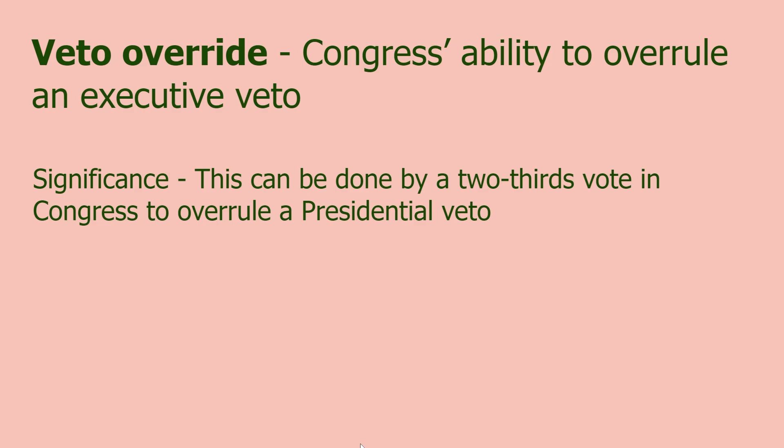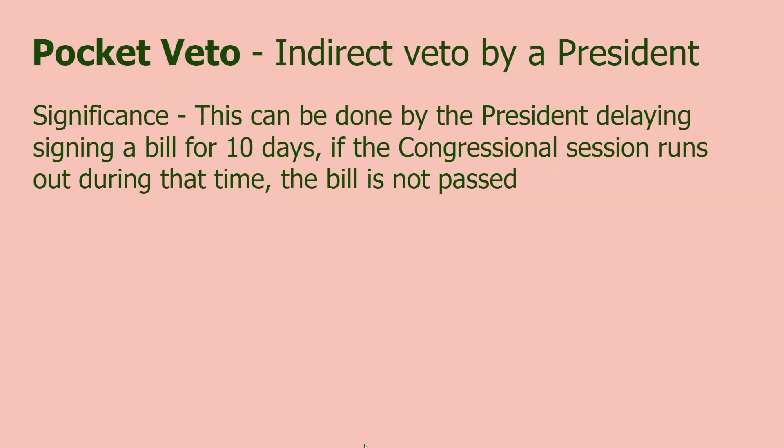Veto override: Congress's ability to overrule an executive veto. This can be done by a two-thirds vote in Congress to overrule a presidential veto, and is more powerful when the president is in a different party than the majority in Congress. Pocket veto: if the president just doesn't sign a bill and the congressional session ends, the bill is not passed — it's just lost. This term shows up a lot on AP Gov tests even though it's a somewhat obscure presidential power.